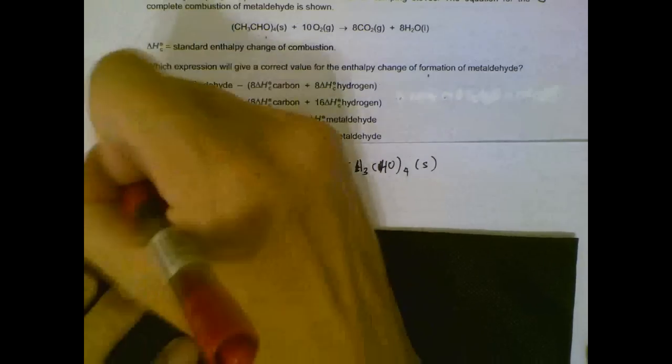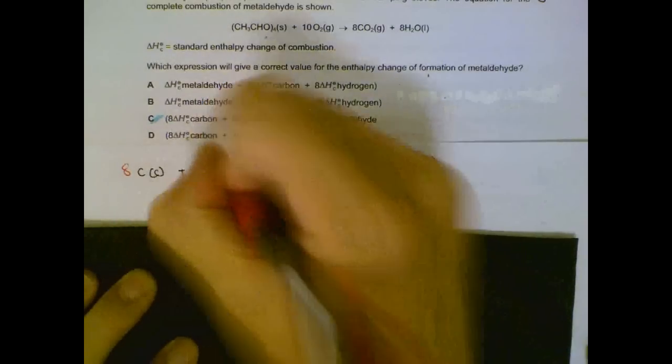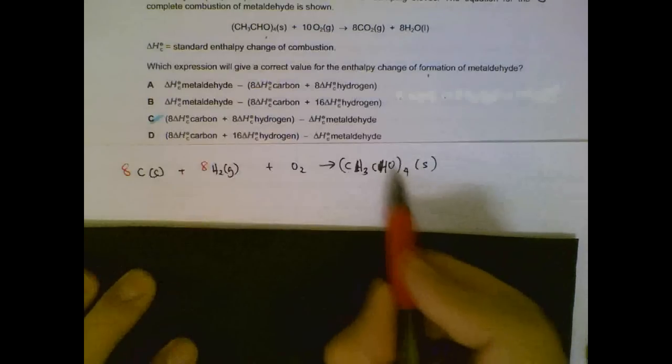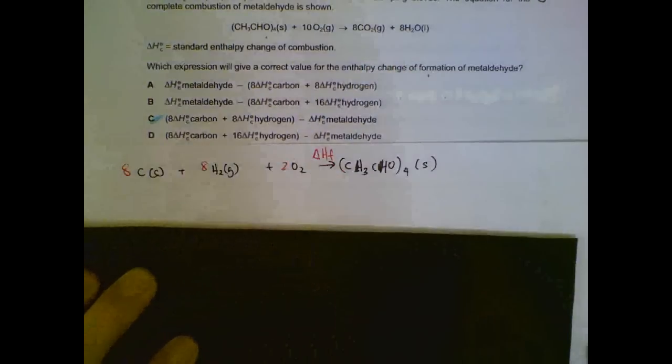Then we try to balance the equation to make sure our atoms are accounted for. We have 8 carbons, 16 hydrogen, so 8 H2, and 4 oxygen. So this is the heat of formation of your methanal. How can we link it to heat of combustion?